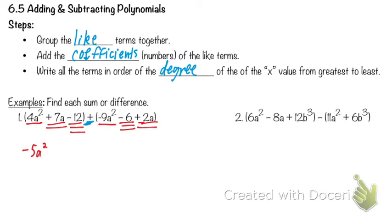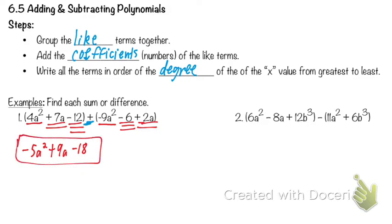Next I'm going to do the two-underline terms. 7a and positive 2a — what do those add to be? 9a. Because we're adding these. And what's going to come last? Negative 12 plus negative 6 — that's negative 18. We had negative 12 in the first parenthesis and negative 6 in the next. So is this already in standard form? Yeah, because of the way we did our problem, this is already in standard form.